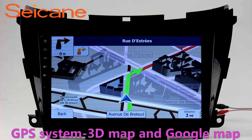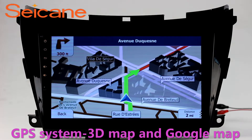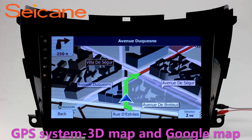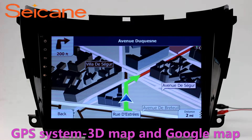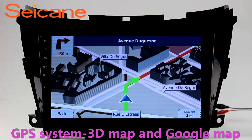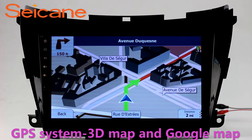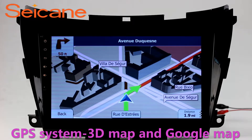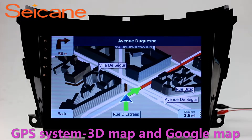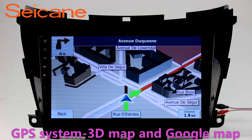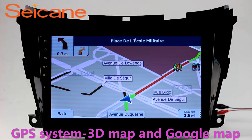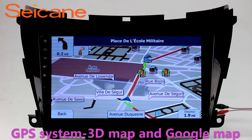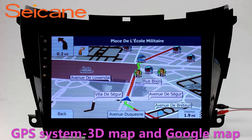GPS. Go to the main menu and open the GPS system. The 3D navigation map shows you accurate GPS locations and route information. It also supports Google Maps. You will never get lost with this function.